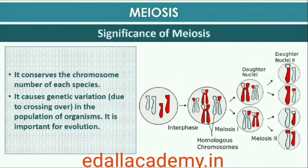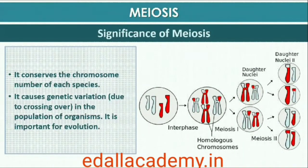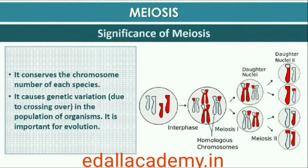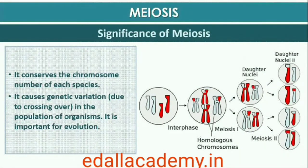Meiosis is the mechanism by which conservation of the specific chromosome number of each species is achieved across generations in sexually reproducing organisms, even though the process paradoxically results in reduction of chromosome number by half. It also increases the genetic variability in the population of organisms from one generation to the next. Variations are very important for the process of evolution.